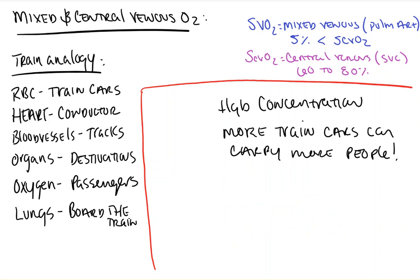Next, we'll look at hemoglobin concentration. The hemoglobin are the train cars in this example. The more train cars you have, the more people you can have on your train — or the more red blood cells you have, the more oxygen molecules you can carry. Tissue has a maximum amount of oxygen it's able to extract at baseline. As a result, the more hemoglobin you have, the greater the total number of oxygen molecules remaining after normal oxygen unloading in tissue returns to the sampling station. A lower hemoglobin means every oxygen molecule unloaded drops the percentage by a greater amount — if one person gets off out of 100, you still have 99%, but if one person gets off out of 10, you only have 90% left. Therefore, a low hemoglobin can lead to a low SVO2 and can be improved with hemoglobin transfusions.